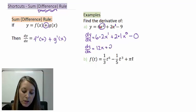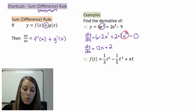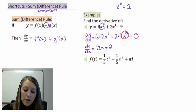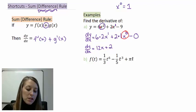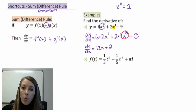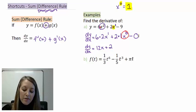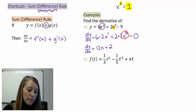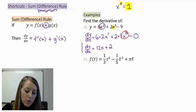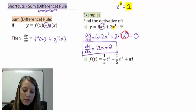Minus the derivative of the constant 9, which is 0. Simplifying: 6 times 2 gives 12x. For the 2 times 1 times x to the zero: anything to the zero power equals 1, so the derivative of x to the first always simplifies to 1. That gives plus 2, and minus 0 drops out. So the derivative of part A is 12x plus 2.